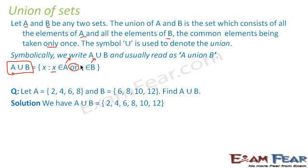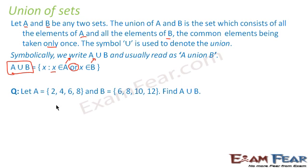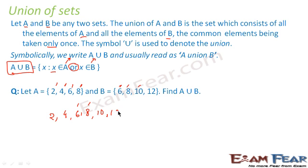Let's take an example. We have set A = {2, 4, 6, 8} and set B = {6, 8, 10, 12}. Now we'll write A union B. First we write the elements of A: 2, 4, 6, 8. Now from B: 6 is already there so we ignore it, 8 is already there so we ignore it, then we write 10 and 12.